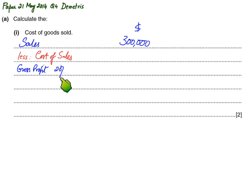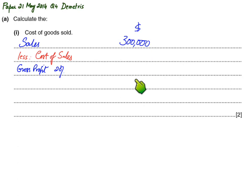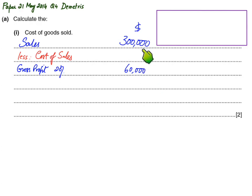We need to multiply the 20 percent margin to get gross profit. As you can see, if we apply 20 percent to 300,000 we get gross profit of 60,000. Now we have two things: revenue is 300,000 and GP is 60,000. I need to reverse work with this to calculate cost of sales.